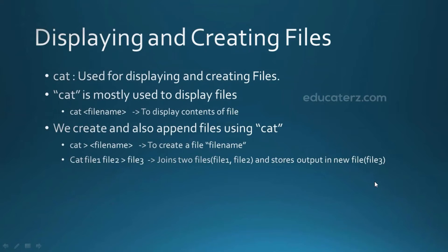When working with a UNIX system, we often need to edit files, write data to files, or check file content. All these operations can be performed using the command named 'cat'. Cat is one of the most important implementations available in UNIX. We can display file contents, create files, and provide data to files using the cat command. To display a file: 'cat filename'. To create and write to a file: 'cat > filename'.